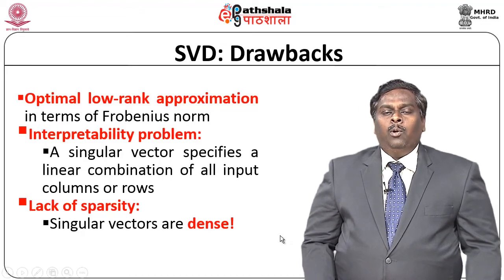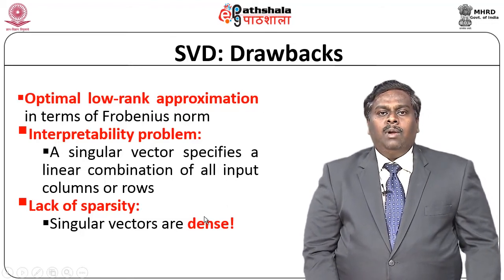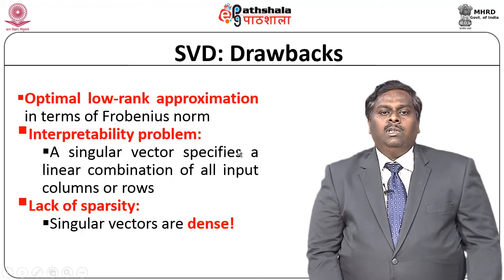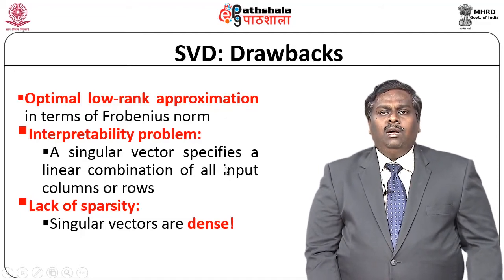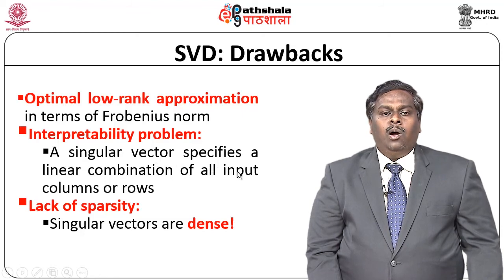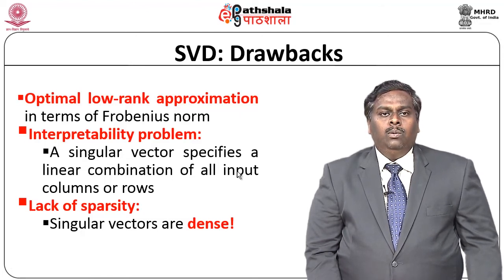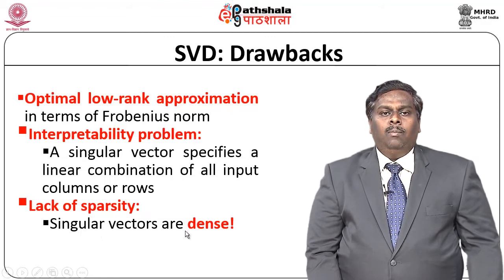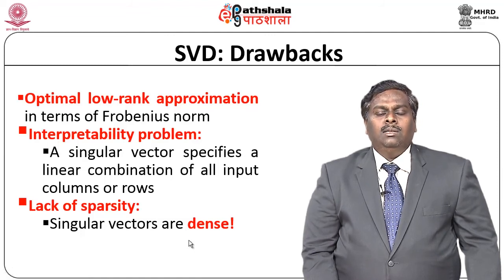This is where you should understand clearly how reduced dimensions are useful. Instead of working on the actual U, singular value matrix, and V-transpose, we worked on very reduced dimensions — this is where dimensionality reduction happens, and the data on which we analyze is reduced to a larger extent. Though this technique provides a reduced dataset, there are certain drawbacks. The resulting matrix derived by multiplying U, S, and V-transpose will be an approximation with a low rank, making interpretability difficult.